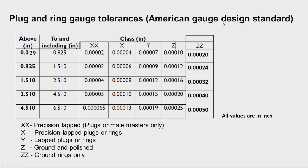This is the American gauge design standard, which specifies different classes of tolerances for plug and ring gauges only. The classes are: XX, X, Y, Z, and ZZ. ZZ class is applicable for ground ring gauges only. XX gauges are very precise lapped gauges and are used as masters. X and Y are used as inspection gauges, and Z is for normal working gauges.